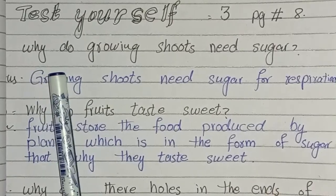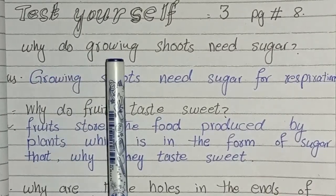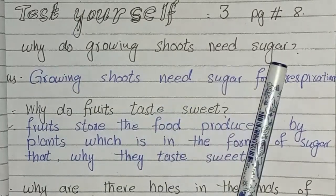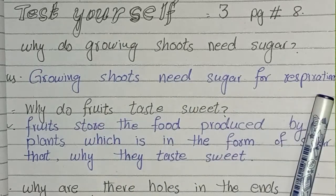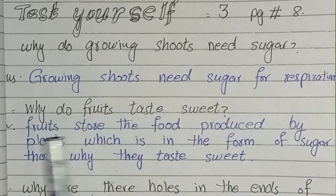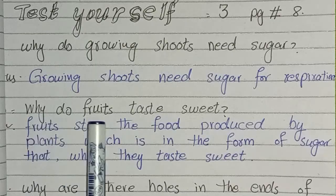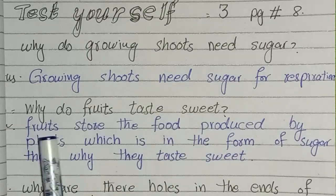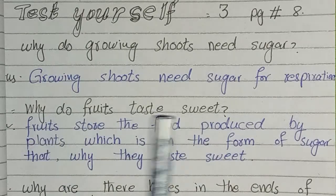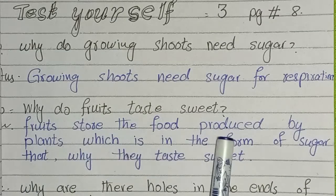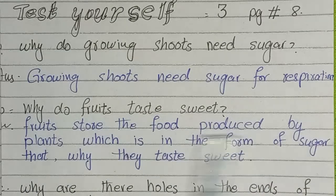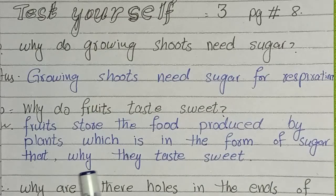Test Yourself 3, Page number 8. Why do growing shoots need sugar? Growing shoots need sugar for respiration. Why do fruits taste sweet? The fruits store the food produced by plants, which is in the form of sugar — that is why they taste sweet.